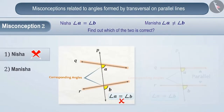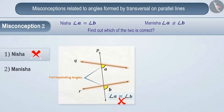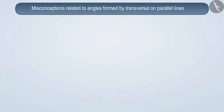Here, angle A and angle B are made by the intersection of line P at line Q and line R. These are surely corresponding angles, but since line Q and line R are not parallel, we cannot say that they are equal. Therefore, Manisha's understanding is correct — option 2 is the correct answer.